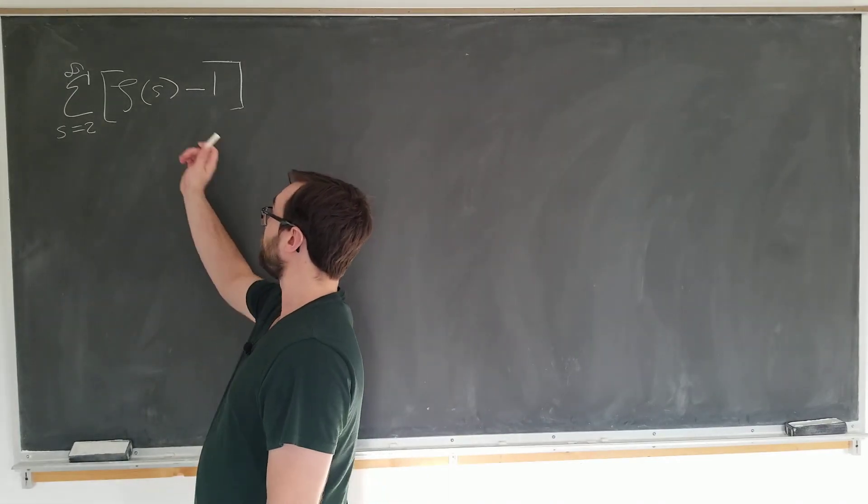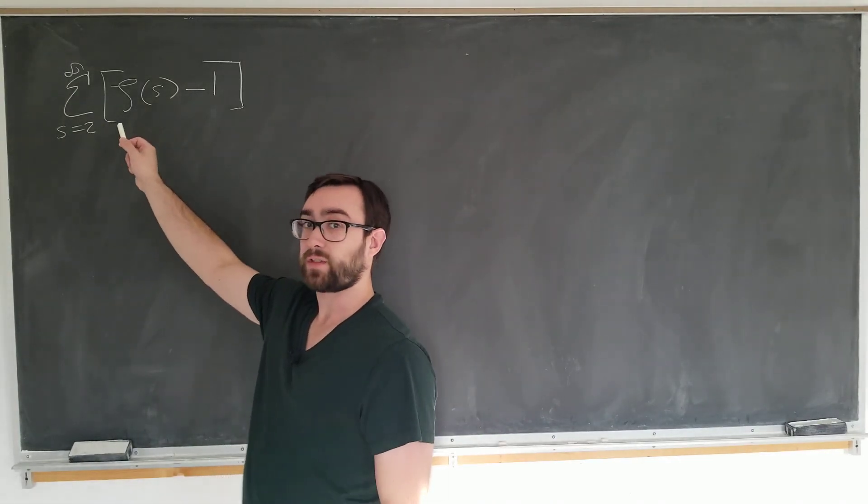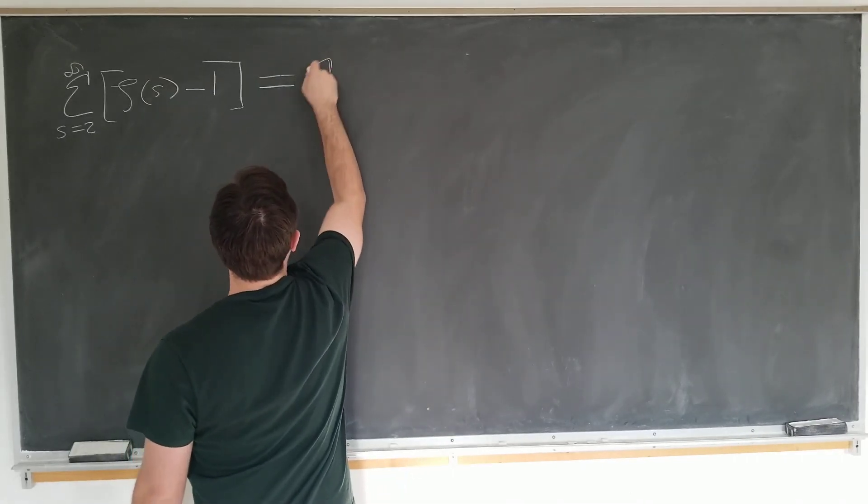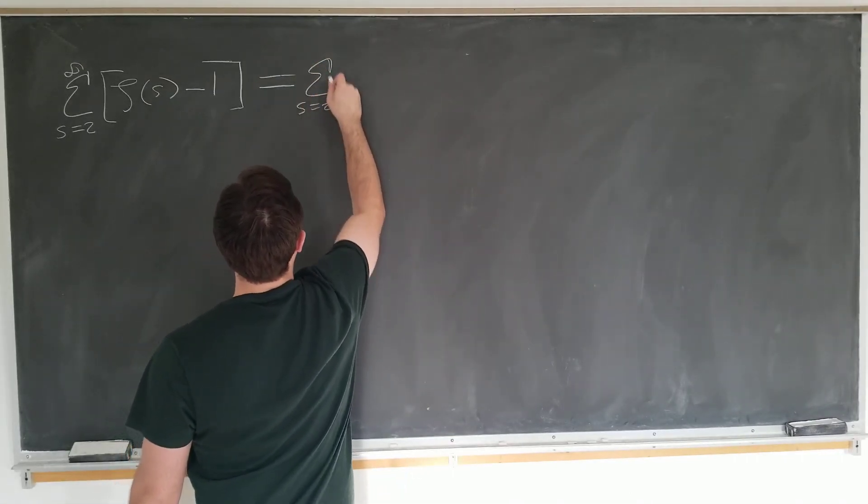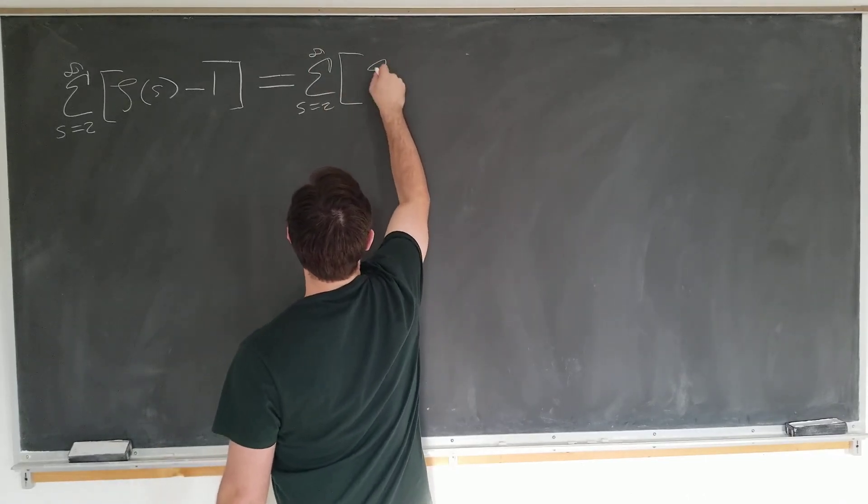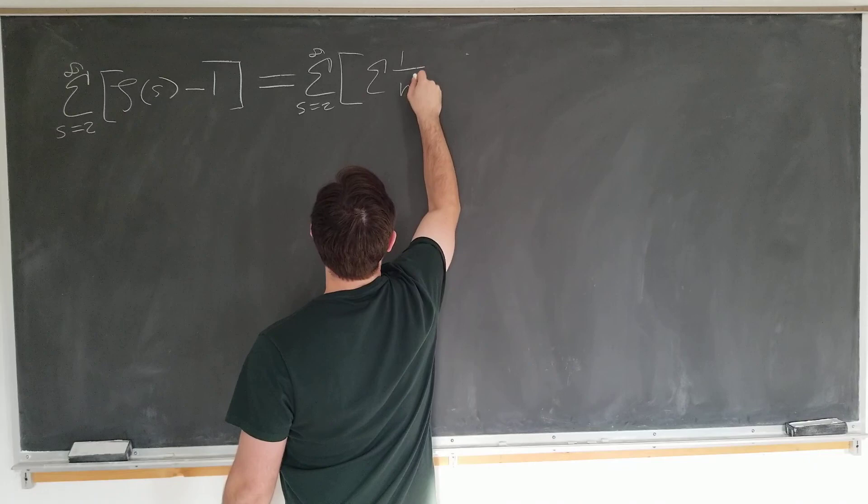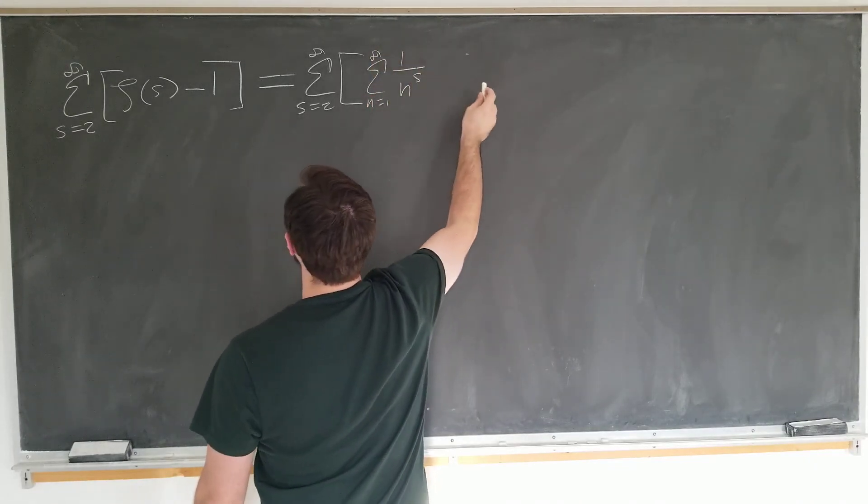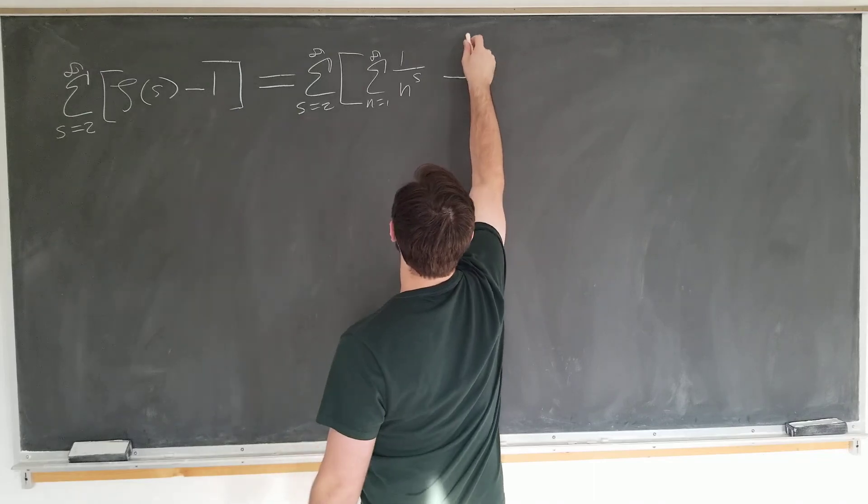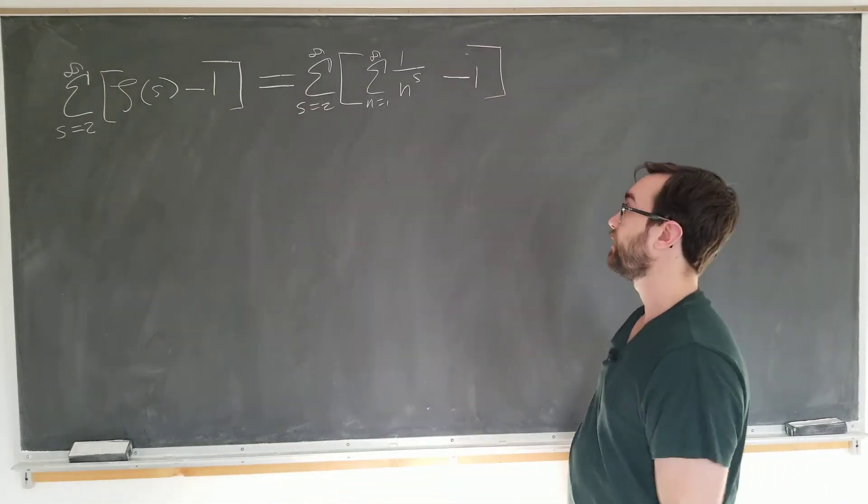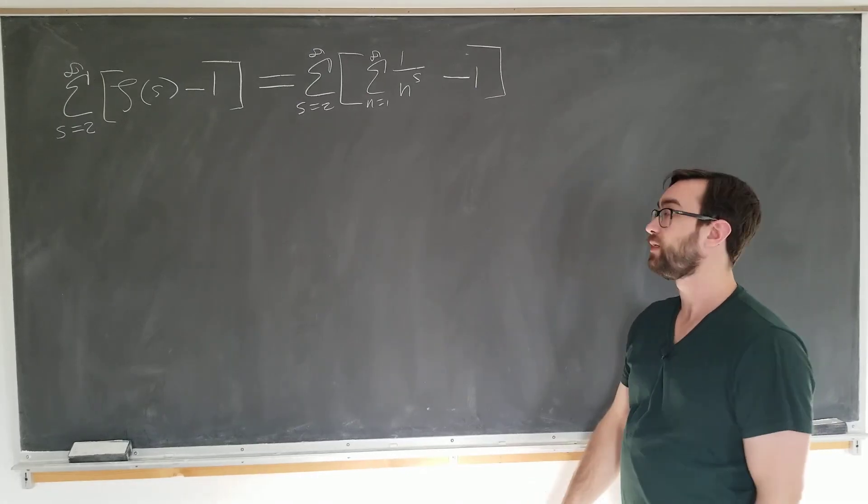Let's go ahead and write down what the zeta function actually is so we can see what we're working with. It is the sum from s going from 2 to infinity of another sum: sum of 1 over n to the s, where n now goes from 1 to infinity, and we're going to subtract 1. So you can see we have a sum of sums, and we'll see how we can simplify this.